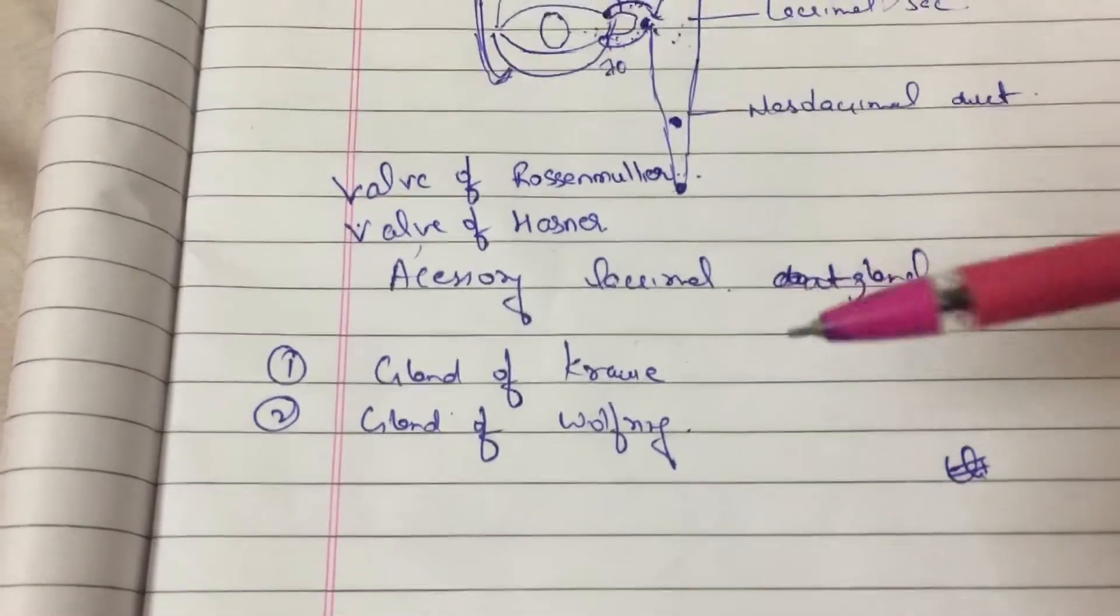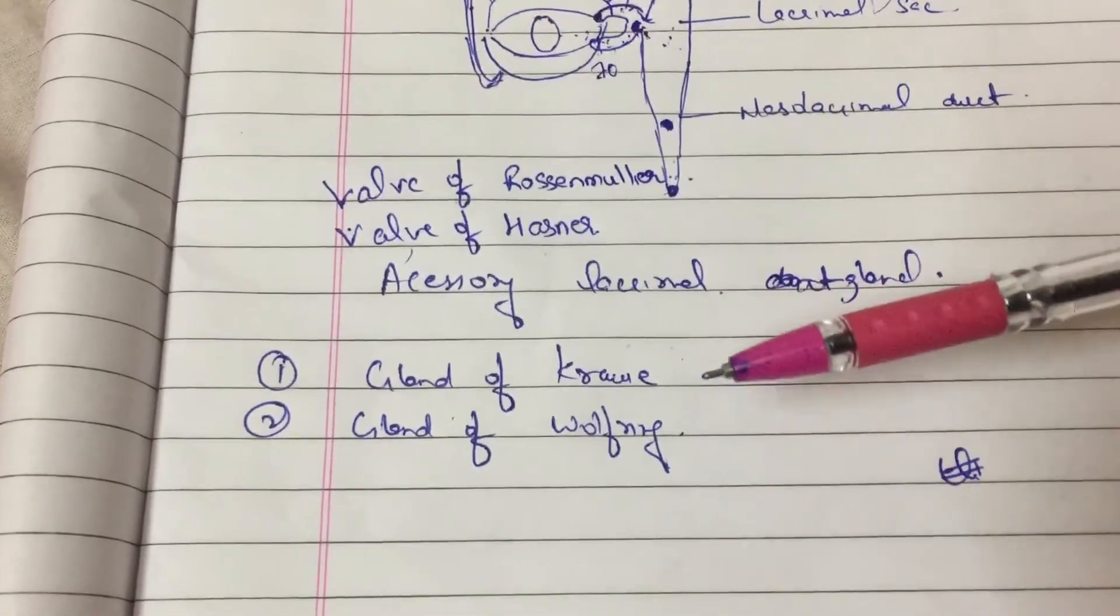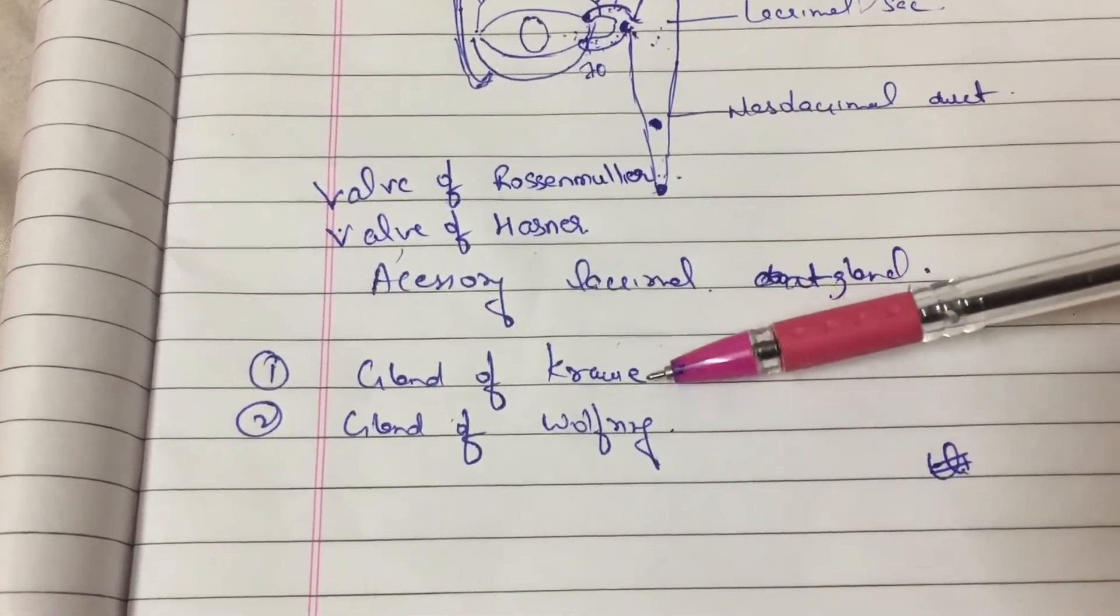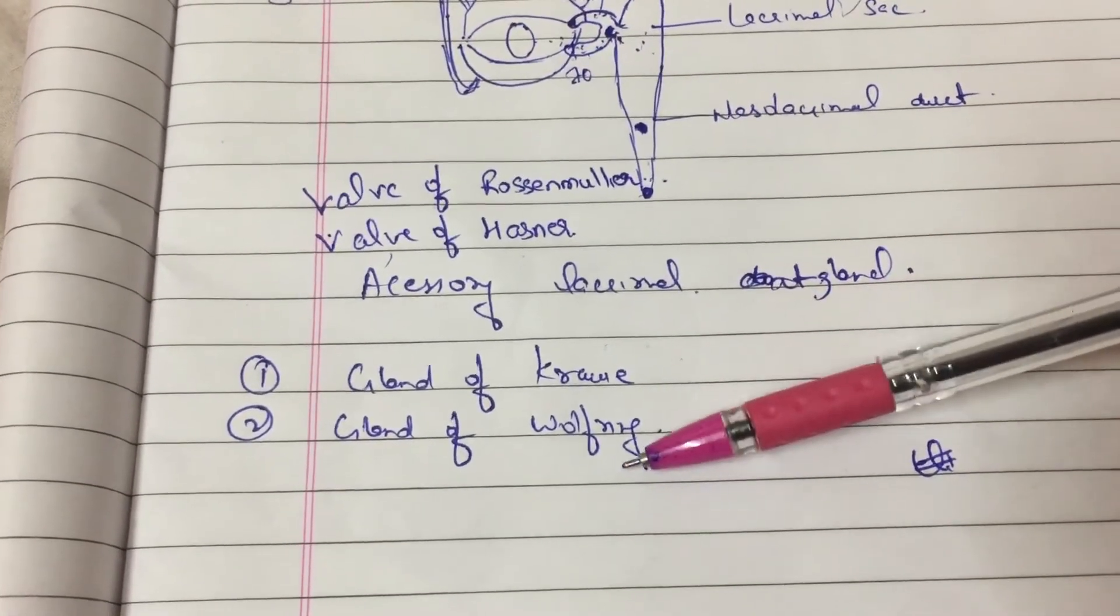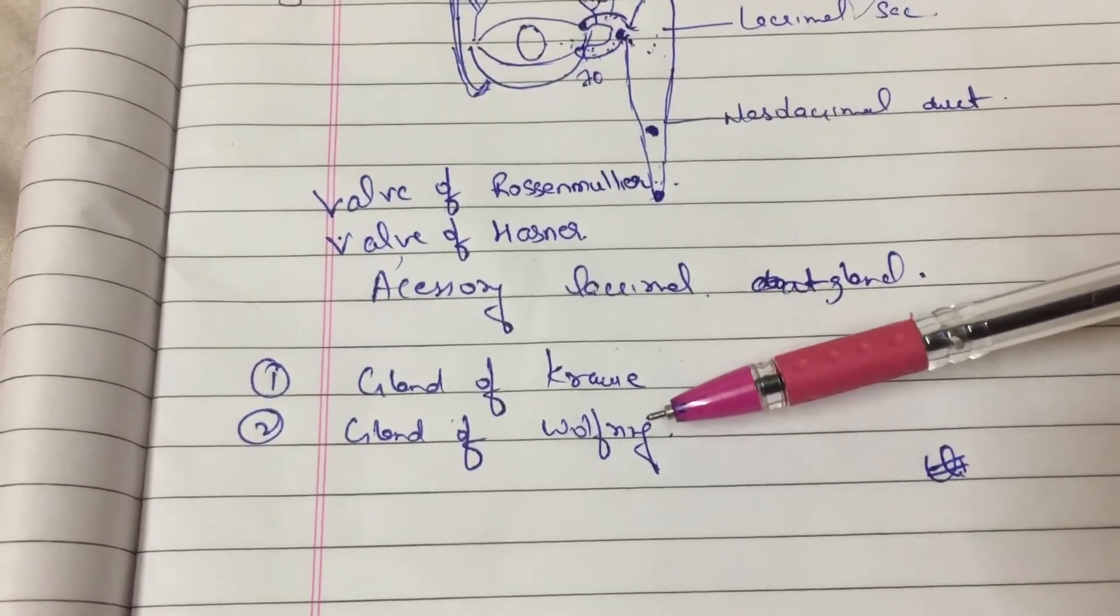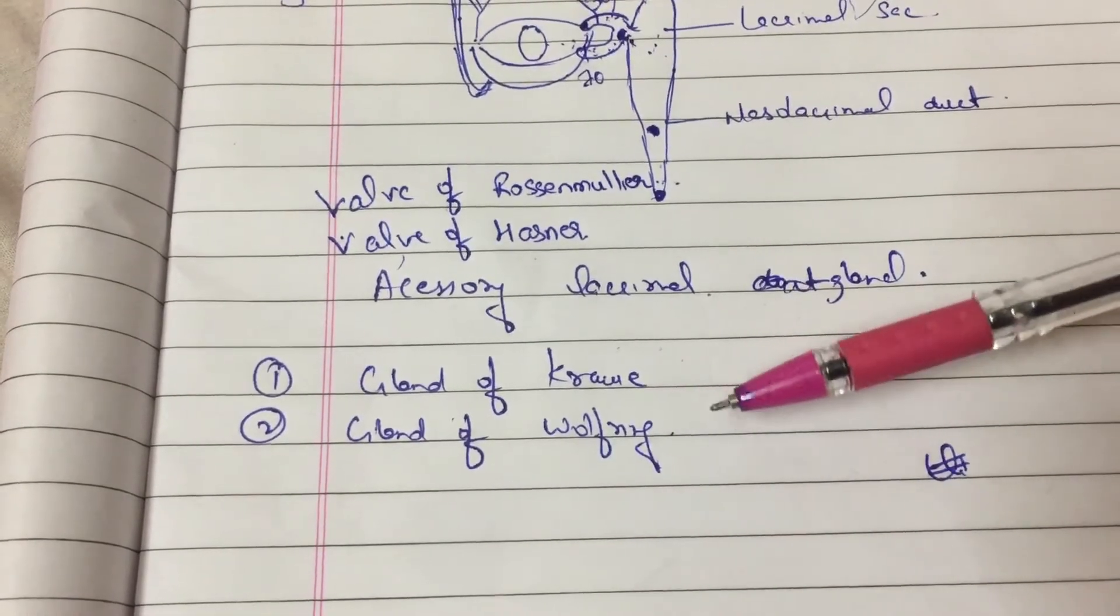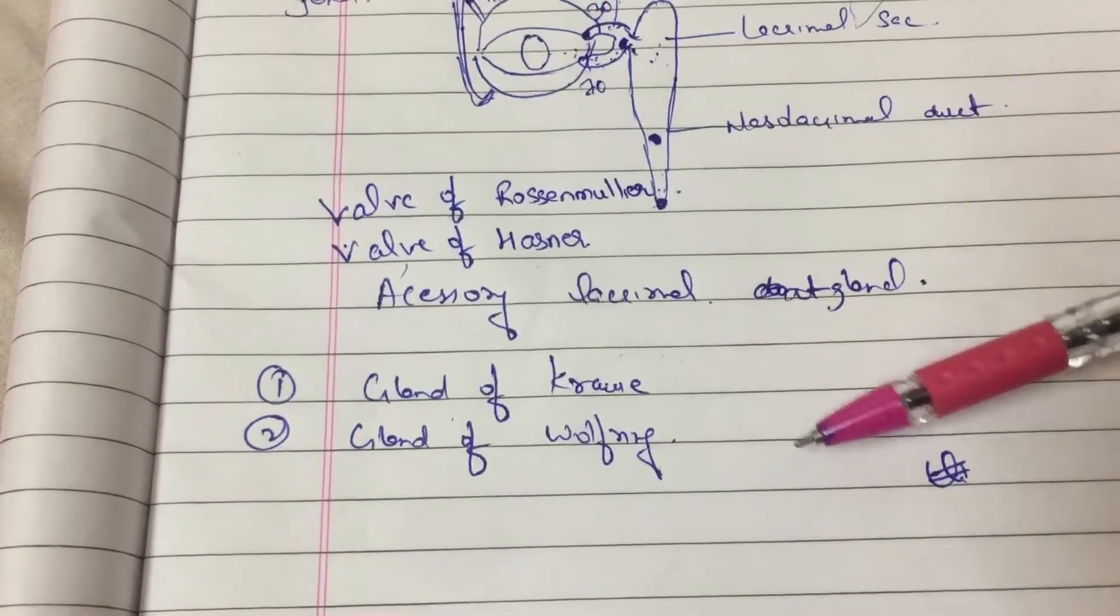And now we will see again the spelling of the two accessory lacrimal glands. That is the gland of Crouse. That is K-R-A-U-S-E. The second is gland of Wolfring. W-O-L-F-R-I-N-G.